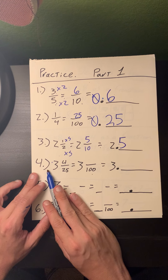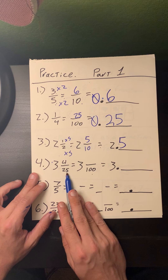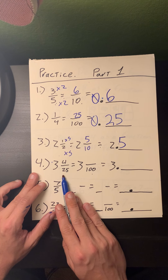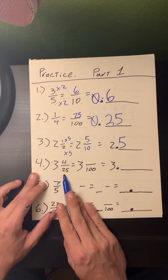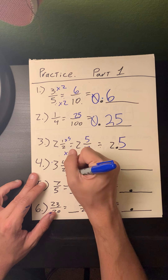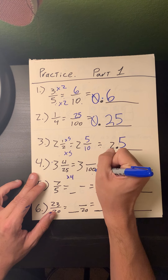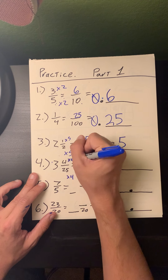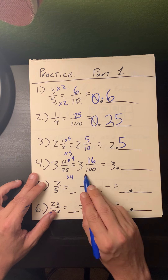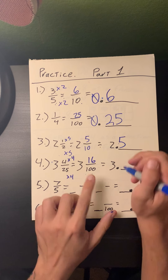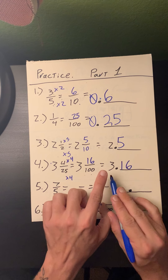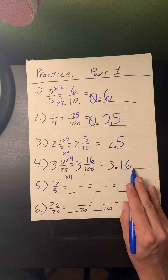Problem number four: the mixed number 3 and 4 twenty-fifths. Twenty-five times 4 equals 100, so I multiply my numerator by 4 as well: 4 times 4 equals 16. Because my denominator is hundredths, I carry the numerator into my decimal points. Three and sixteen hundredths is equal to 3.16.